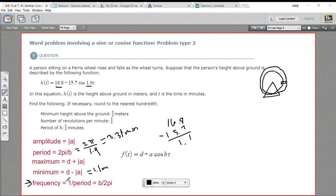Now our frequency is really the reciprocal of the period. So we're going to have 1 over the period here. So that is going to be 1 / 3.31. Or you could think of this as 1.9 / 2π. Either way is going to come out to the same value.